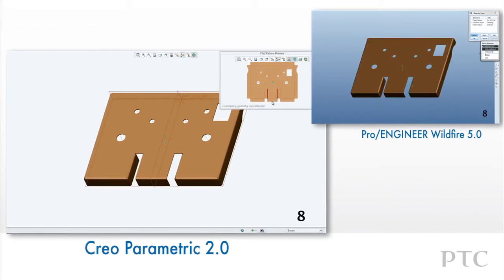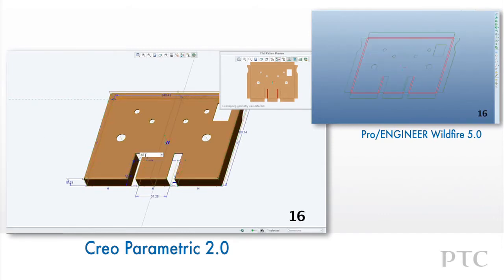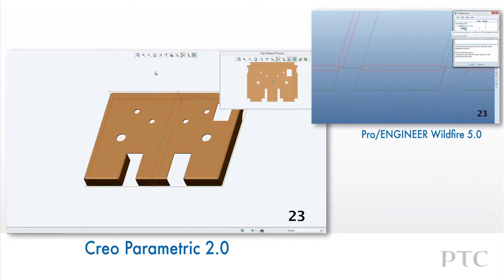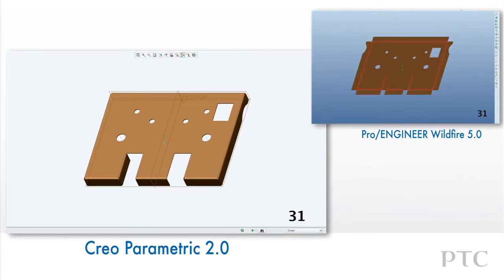One of the biggest enhancements in Creo Parametric is the flat pattern preview function. This unfolds the sheet metal part in a sub-window and also allows us to preview overlapping geometry, highlighted in red. We can then modify the part in the form state without having to create unbend and bend back features. Another significant enhancement is the part bounding box measurements in the flat pattern preview. In Pro Engineer Wildfire 5, we would have to add measure features to calculate this.